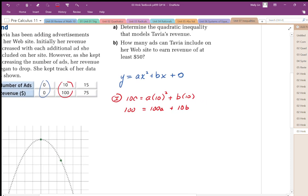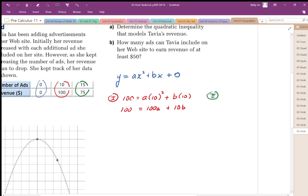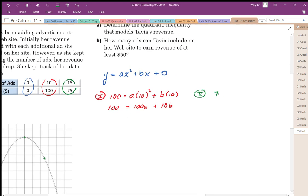So there's my first equation. I need to come up with a second equation, and I have another coordinate to come up with the second equation. So my second equation is going to be based on 15, 75. So my revenue is 75 when I have 15 ads. So it's going to be 15 squared plus B times 15. And then simplifying this out, I get 225A plus 15B.